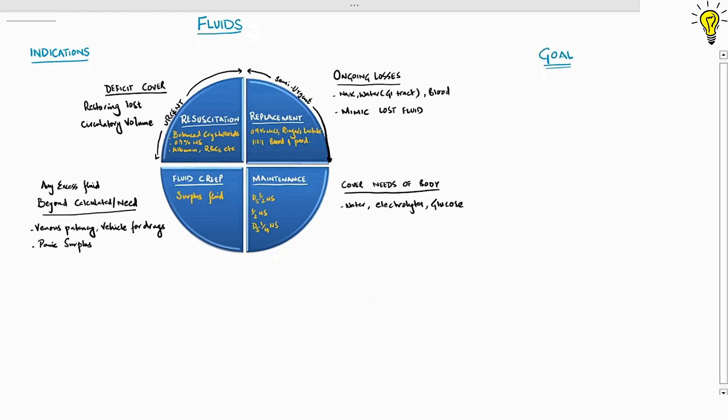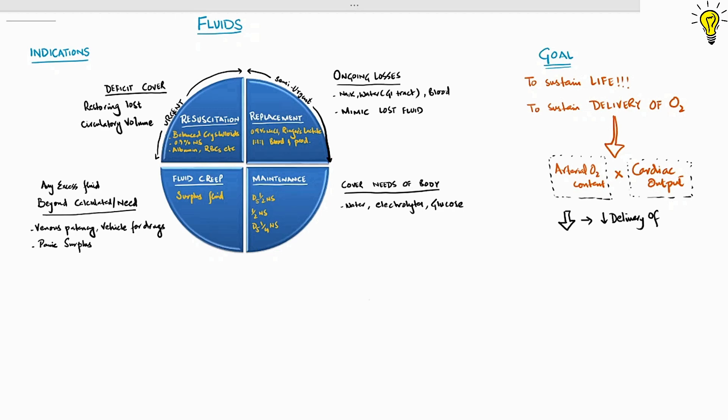Why do we give fluids? The goal is to sustain life and life is sustained by oxygen delivery into tissues. We know that delivery of oxygen is arterial oxygen content multiplied by cardiac output. Any reduction in one or both of these factors will cause reduced delivery of oxygen and hypoperfusion or ischemia.